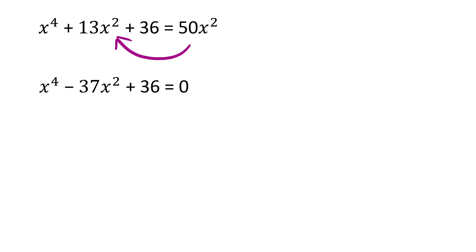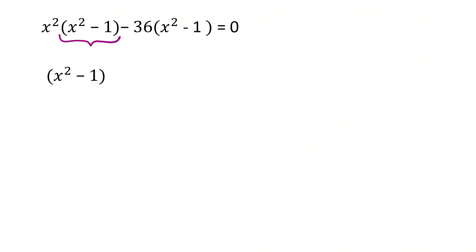Now, I write minus 37 like minus x squared minus 36 times x squared. So, I can factor out x squared from these two and factor out minus 36 from these two. Then, I factor out x squared minus 1 from both terms. Then, I reach x times x squared minus 36. Since the multiplication of two terms equals 0, either the first one is 0 or the second one is 0.